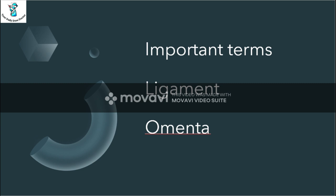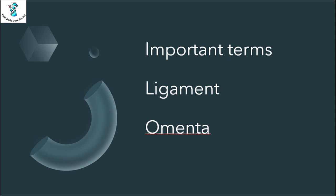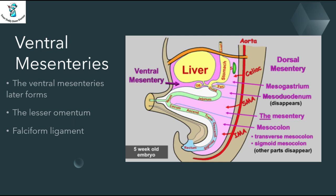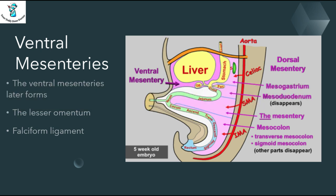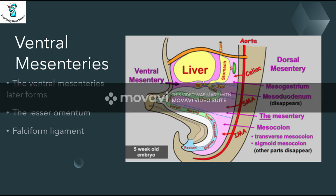There are two important terms used in this development of the stomach: one is ligament and the second is omentum. Whenever a solid viscera of the abdominal wall is connected to any organ or part, it is called a ligament, while the omentum is the connection of the stomach with any organ. The falciform ligament connects the liver with the body wall, while the lesser omentum connects the stomach with the liver.